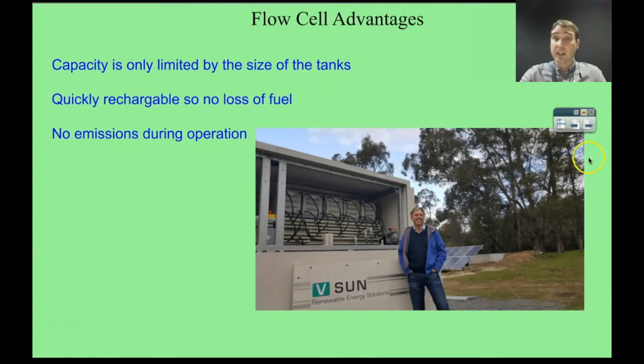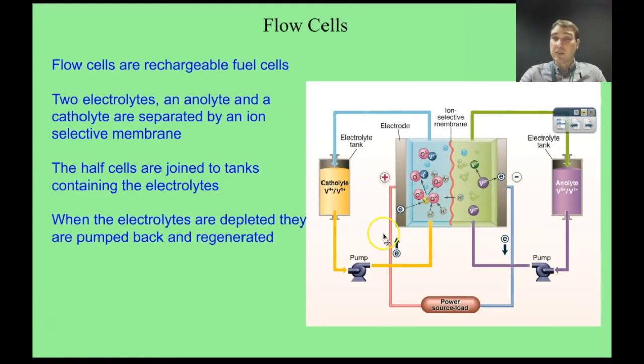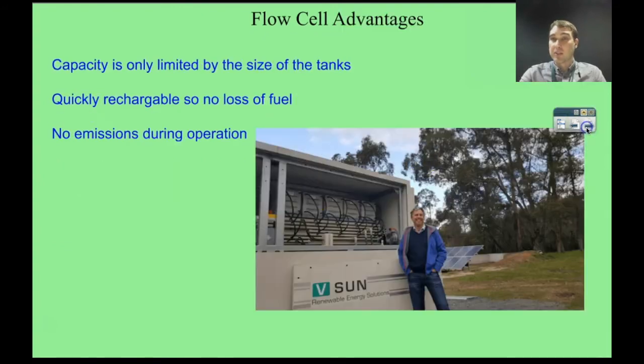So the advantages of a flow cell are the amount of electricity you can generate is dependent on how big your tanks are and how much of the anolyte and catholyte you have. The bigger the tanks, the more you can provide, the more electricity you can provide. So this guy here is using solar power to regenerate the energy from the flow cell, to pump the anolyte and catholyte in the opposite directions. This is being looked at in terms of home systems.